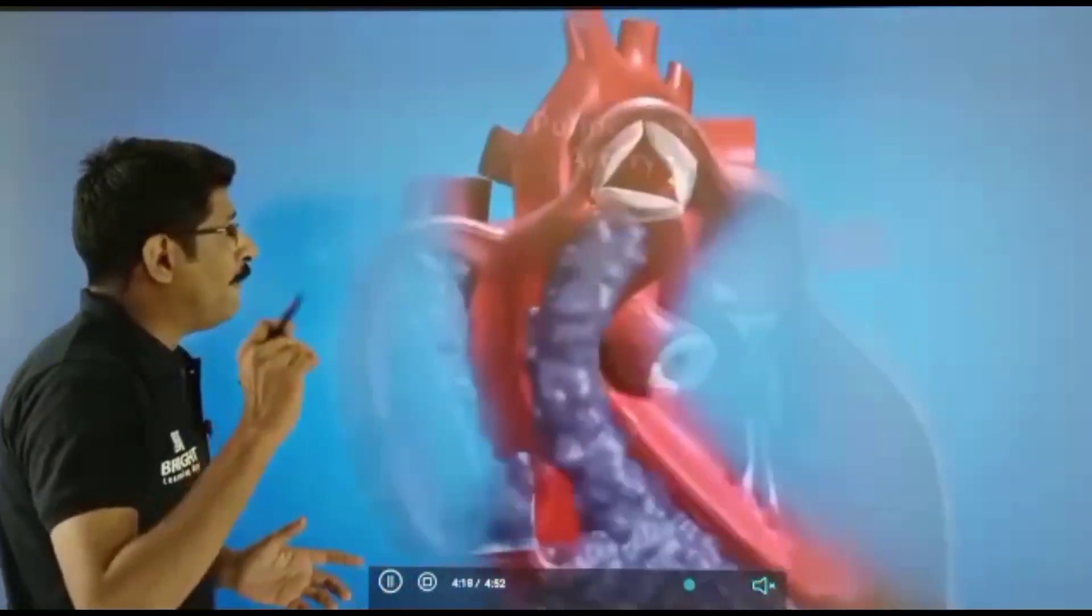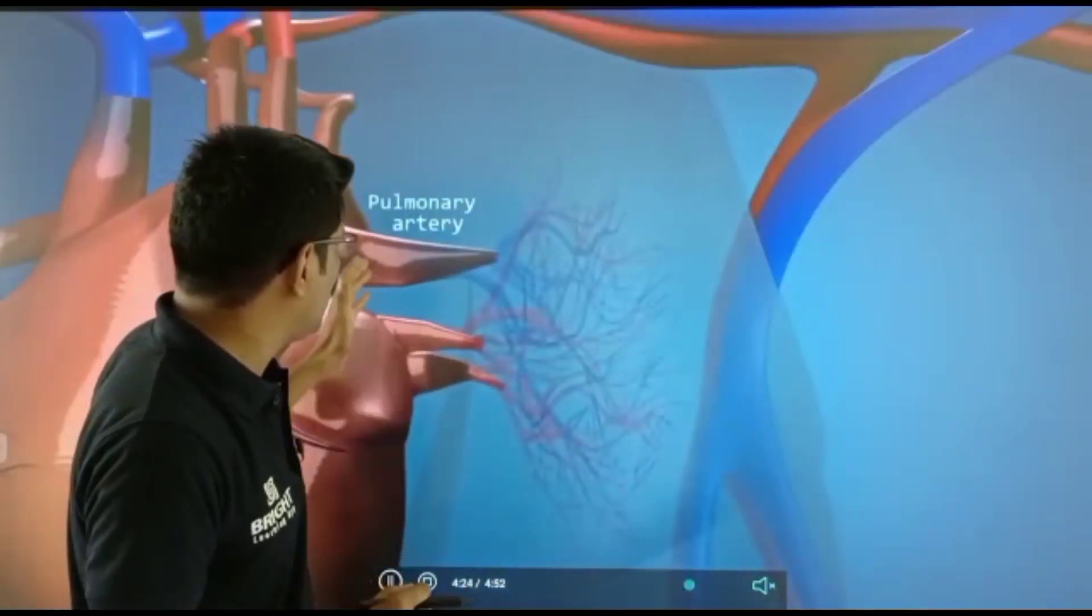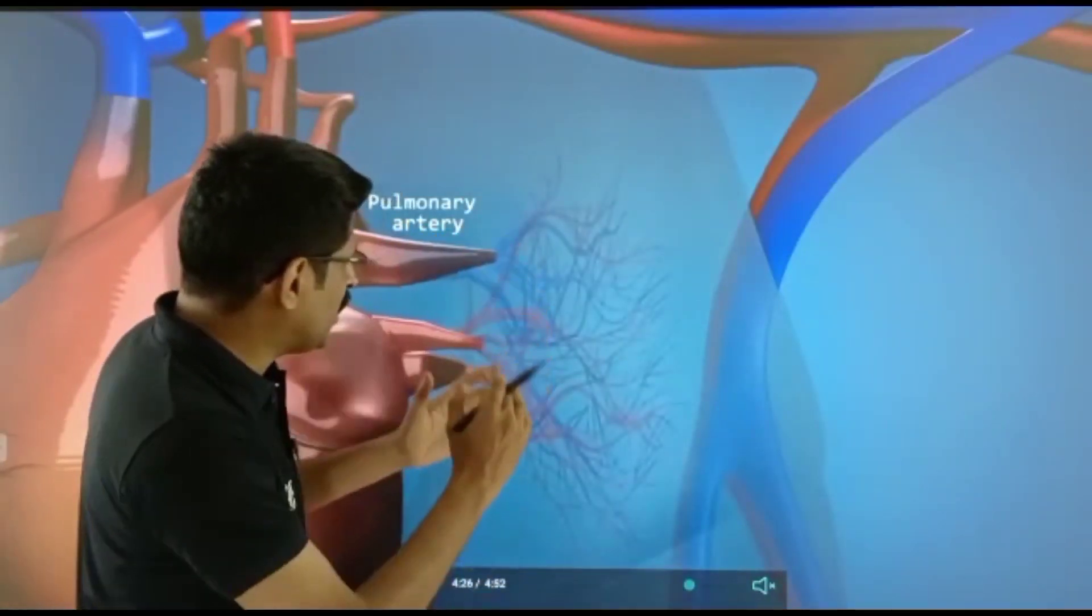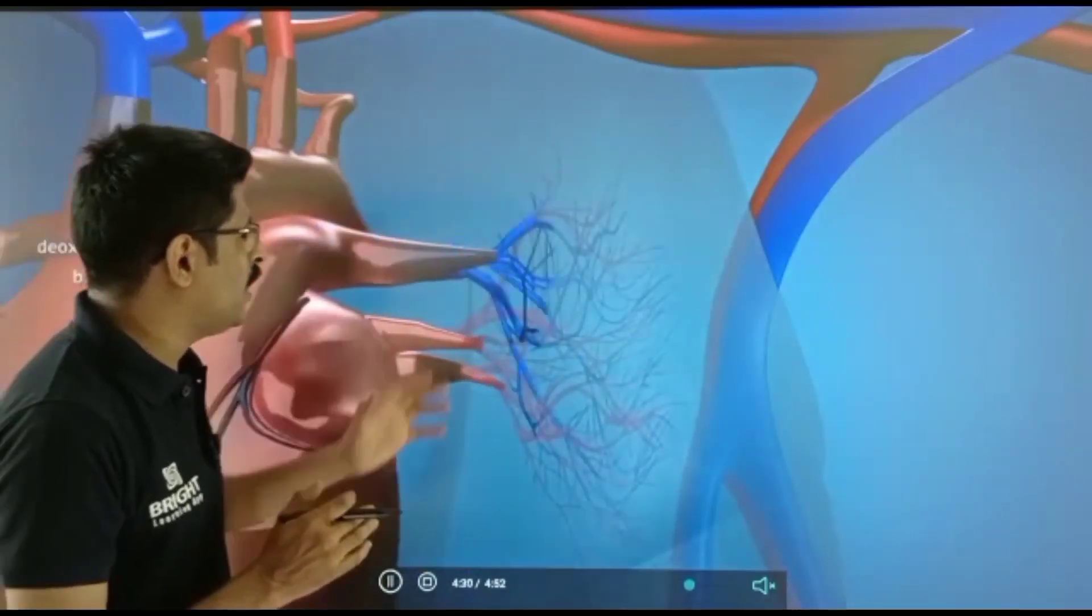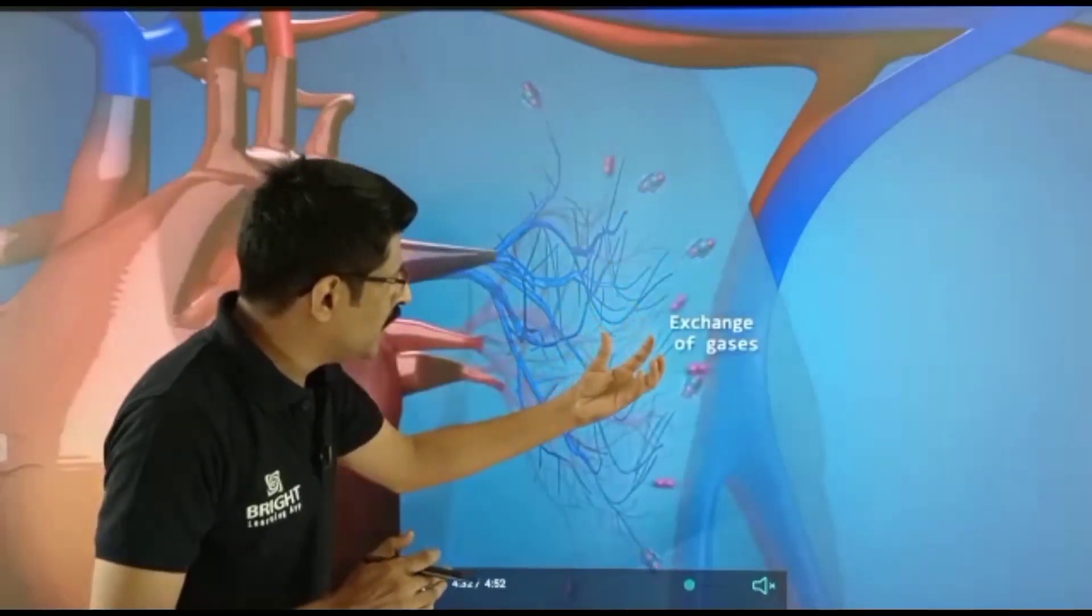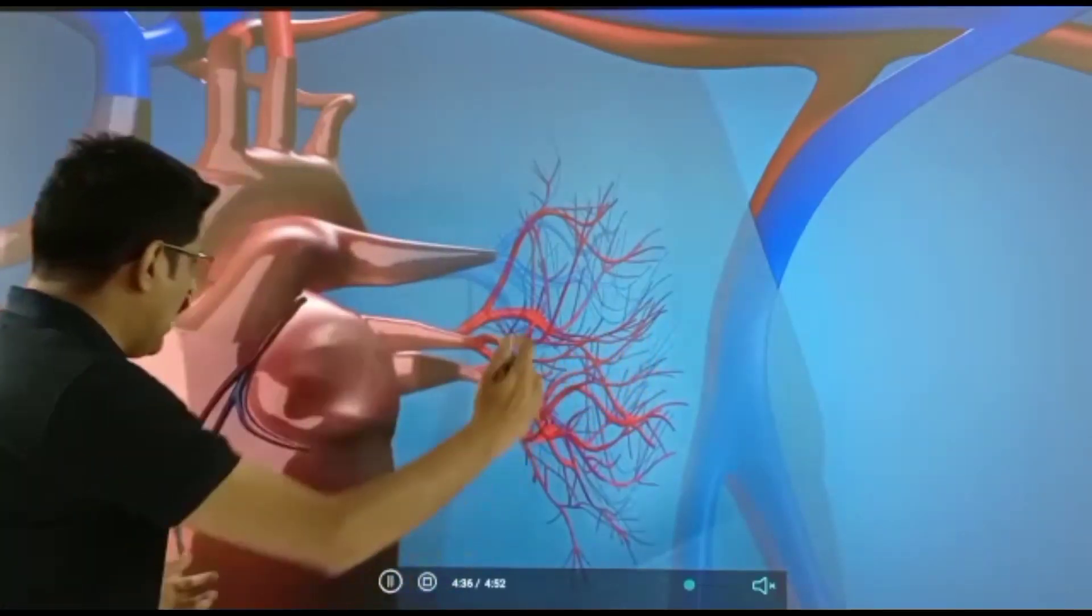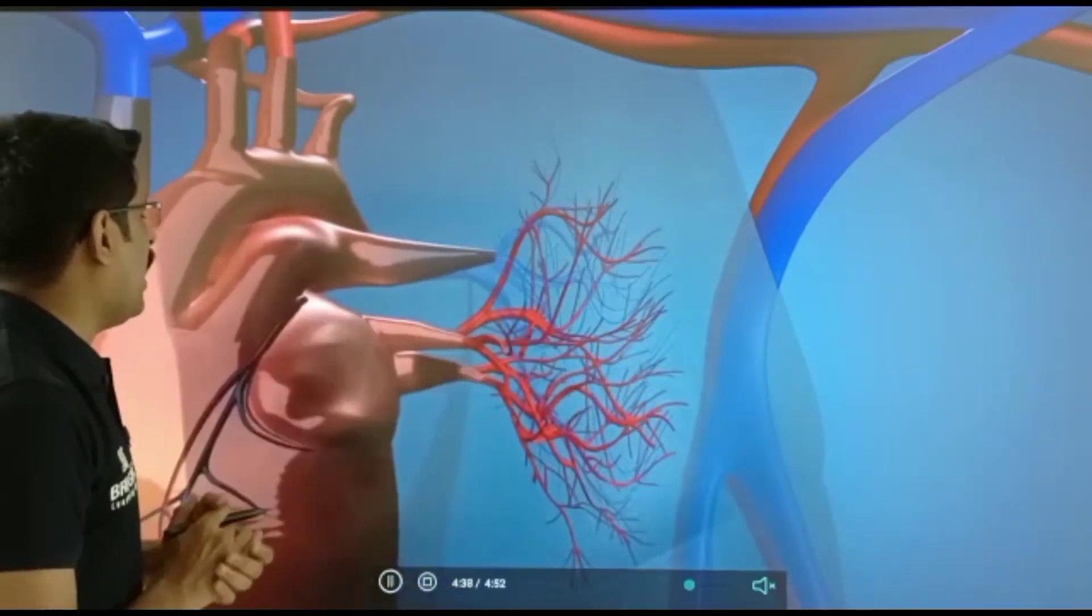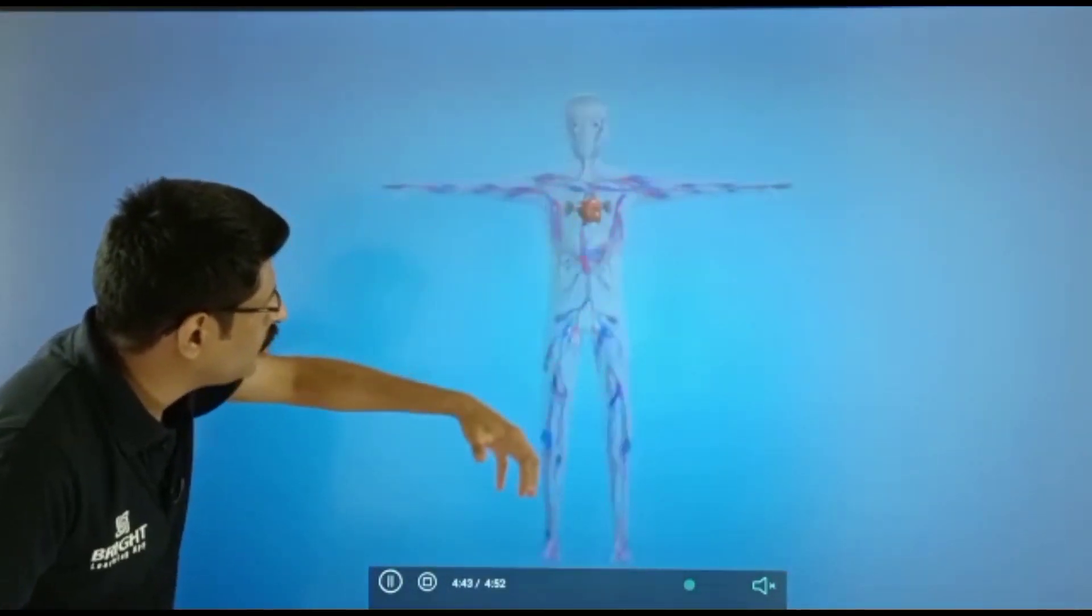The pulmonary artery carries deoxygenated blood to the lungs. Inside the lungs, in the alveoli, gaseous exchange takes place. The oxygenated blood is then carried by the pulmonary vein and reaches the left atrium again.